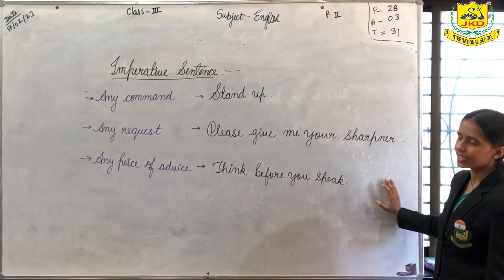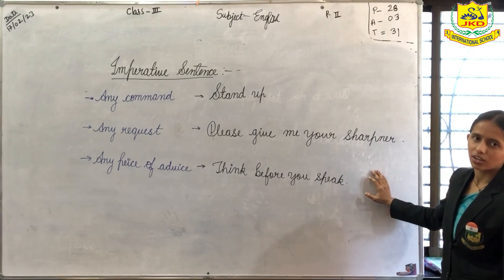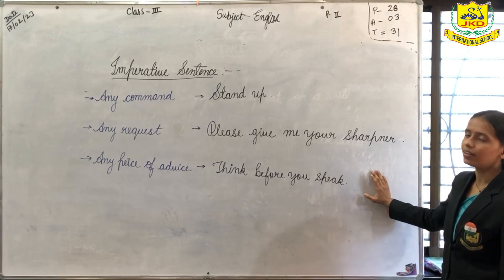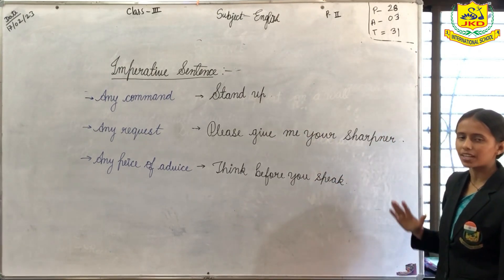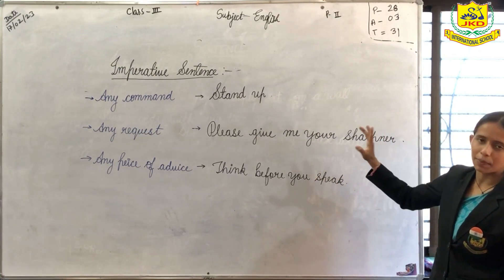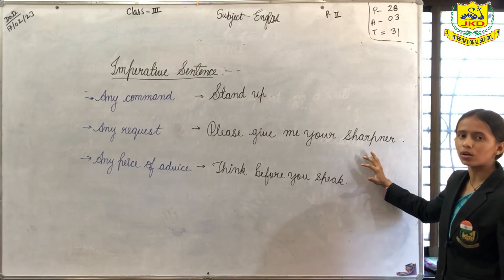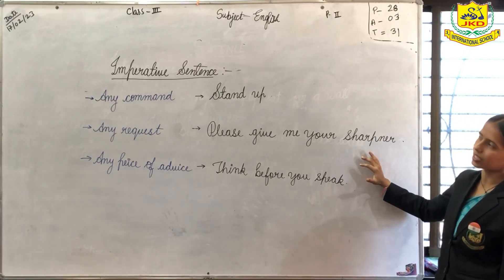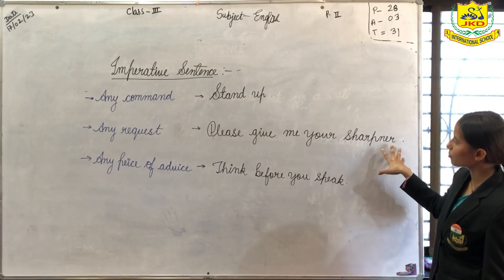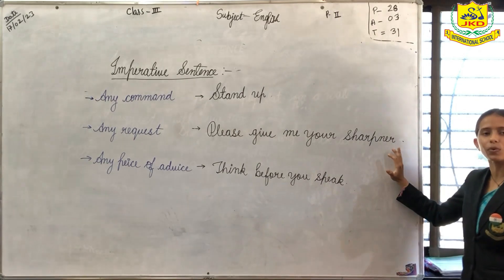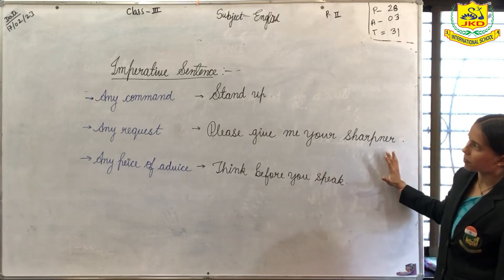The third type of sentence is imperative sentence. Any command, any request, or any piece of advice comes under imperative sentence. For example, stand up. Here the person is giving a command, so it would come under imperative sentence. Second is request — when you ask for a request, it also comes under imperative sentence. For example, please give me your sharpener. Here the person is requesting the other person to give his sharpener, so it could also come under imperative sentence.